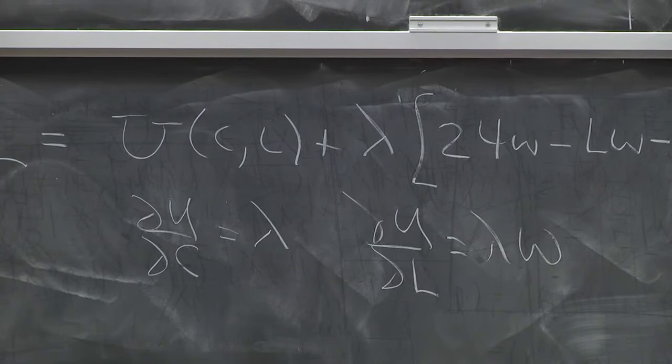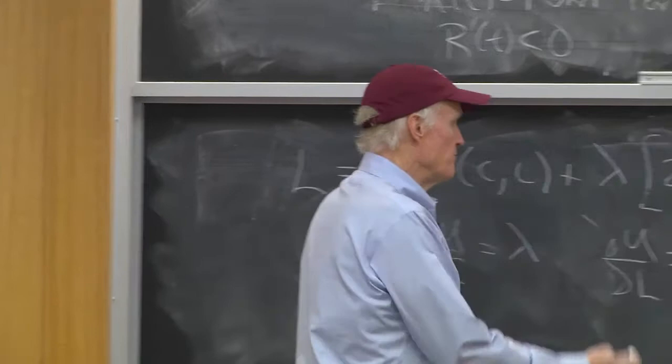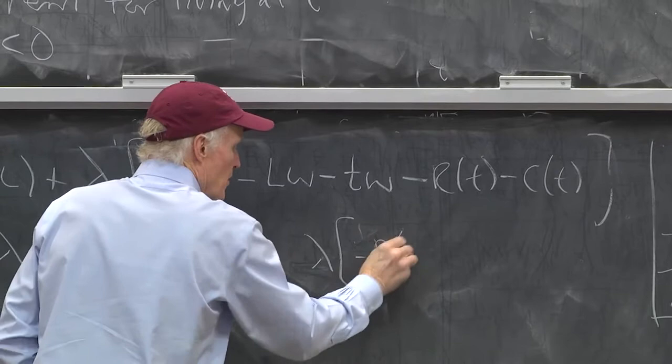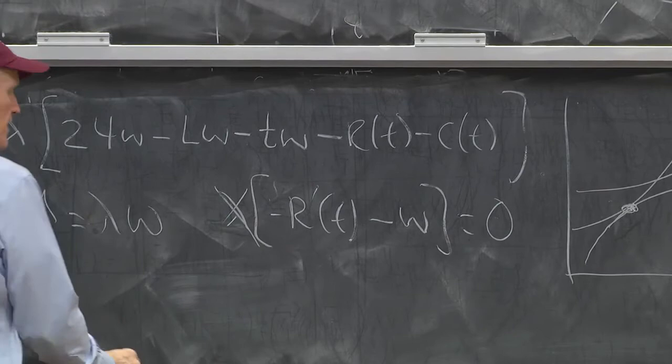What about T? What's the first order condition for T? Well, differentiating with respect to T, I get lambda minus R prime of T minus W equals zero. So lambda doesn't matter. So I get W equals minus R prime of T.